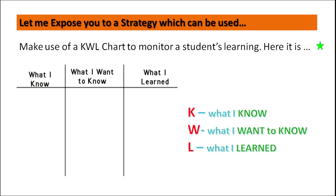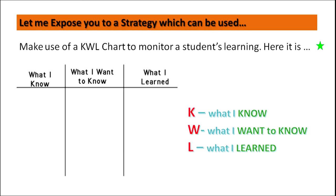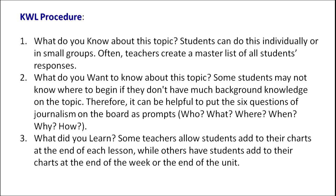Let me expose you to the KWL strategy, which is a powerful strategy we as teachers can make use of. K stands for what I know about something I am going to learn — what I know about plants. W stands for what I want to know — what do I want to know about plants that I am not familiar with? And L is concerned with what have I learned. For example, I want to talk to my students about insectivorous plants — the pitcher plant. The learner writes what do I know about plants, what do I want to learn about this plant, and at the end of learning, what have I learned in this whole process.